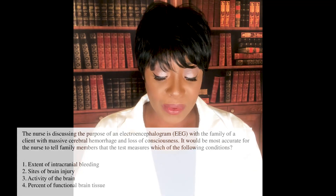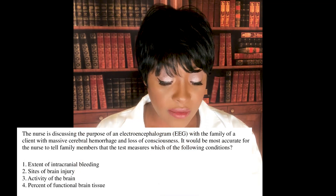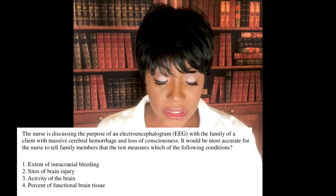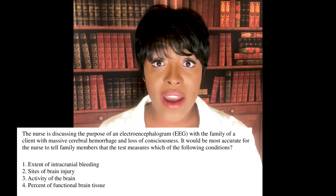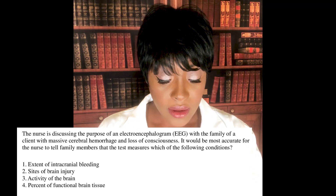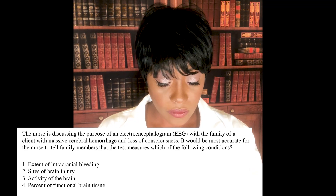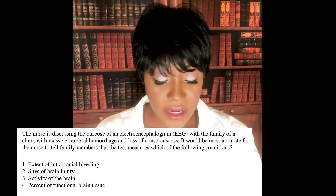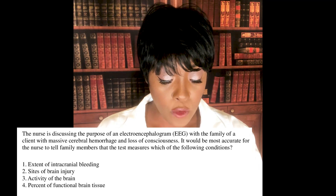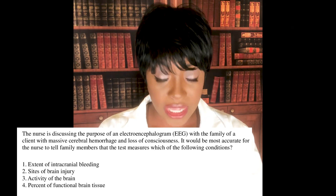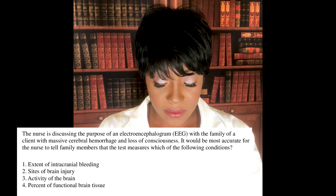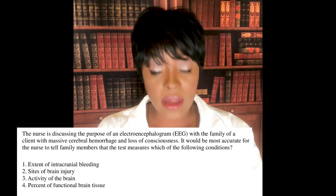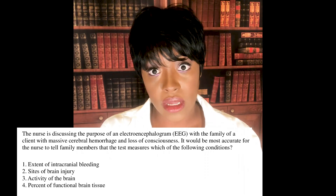The nurse is discussing the purpose of an EEG with the family of a client with massive cerebral hemorrhage and loss of consciousness. It would be most accurate for the nurse to tell family members that the test measures which of the following? One: extent of intracranial bleeding. Two: sites of brain injury. Three: activity of the brain. Four: percent of functional brain tissue. The correct answer is three — activity of the brain. That's what the EEG will tell us.